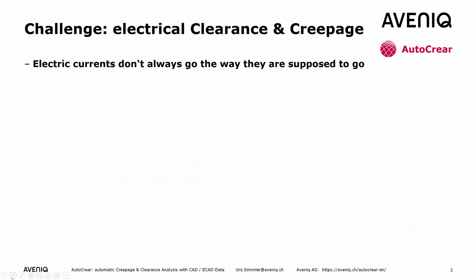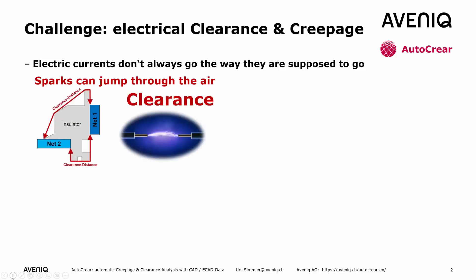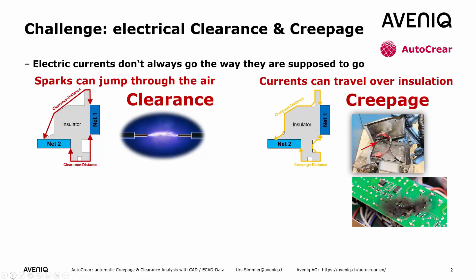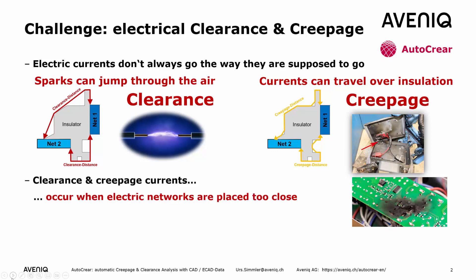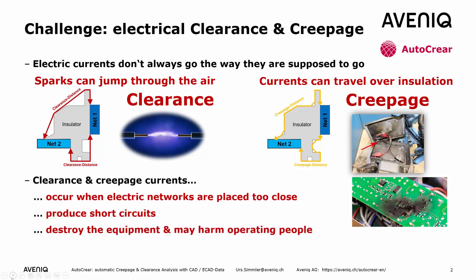What's the challenge? Electrical currents do not take the way they're supposed to. Sparks can jump over the air — that's clearance — and currents can travel over insulations. When electrical networks are placed too close, they produce short circuits and destroy the equipment. We have to avoid them at any cost.